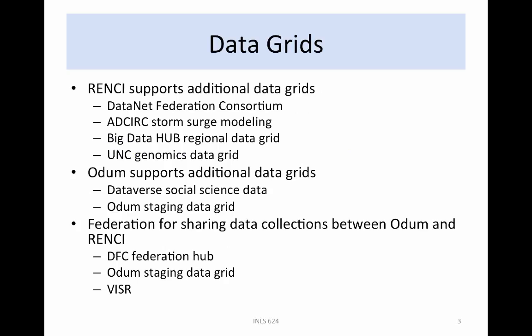Interdisciplinary research is enabled through the federation of discipline-specific data grids. Each data grid provides the tools, data collections, and analysis procedures needed for domain research. Federation of the data grids enables reuse of the analysis procedures in other domains, collaborative research on joint research questions, and access to environmental and social science data sets. This is becoming more important as NSF requires that each funded project justify the impact of the research.